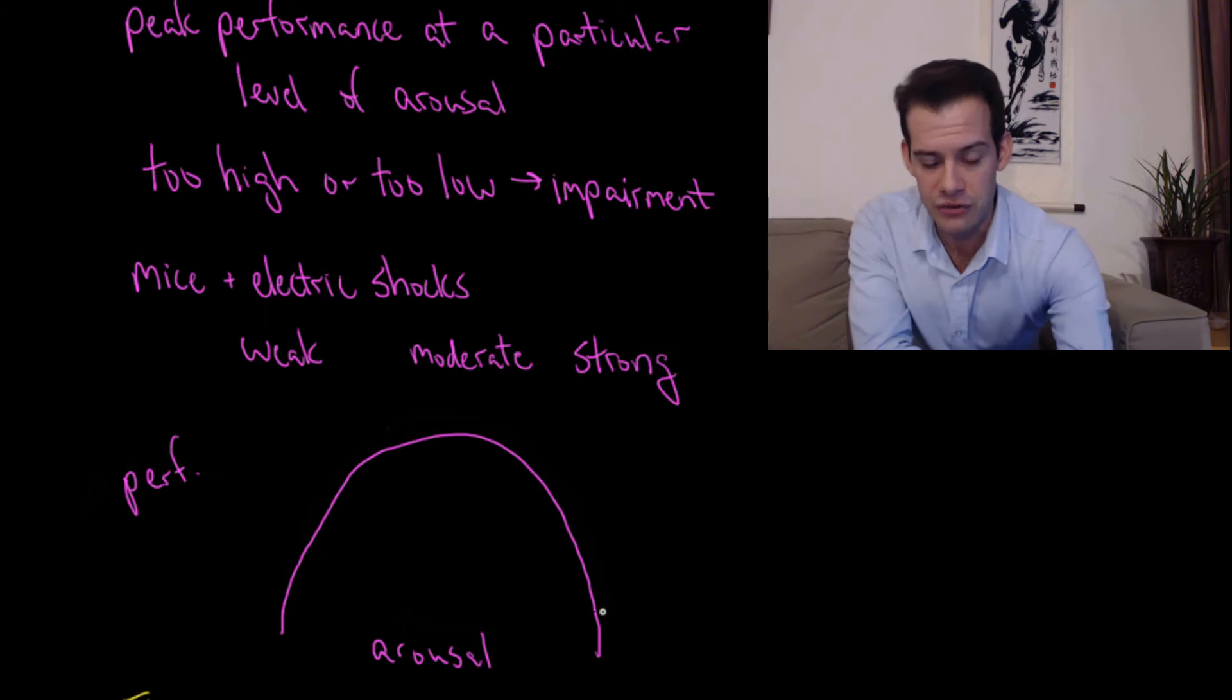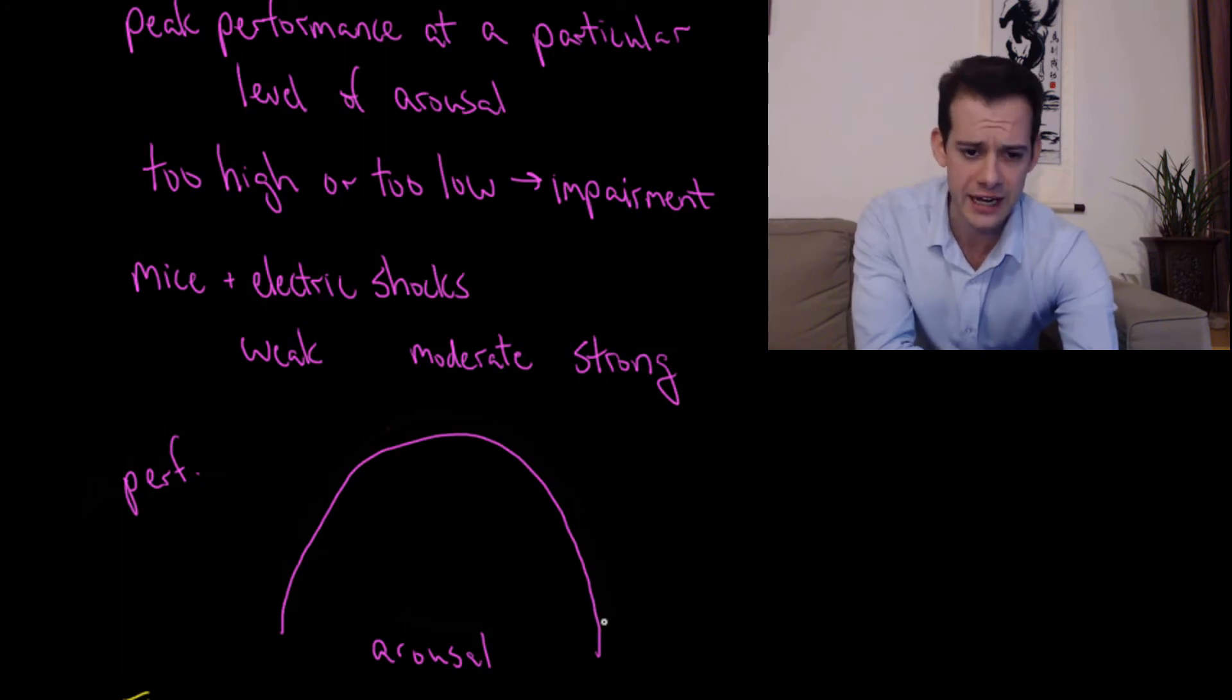Similarly, if your arousal is extremely high, you're probably not going to do your best either, because you're second-guessing yourself, you're extremely nervous, you're shaking, you can't concentrate, you're distracted too easily, you're really worried about what's going to happen on the test—you're probably not going to do your best. But somewhere in the middle, there's some optimal state of arousal that you need to find that is going to help you to get your highest level of performance.